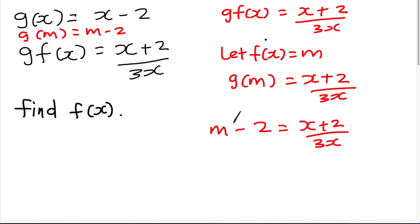Then what is my objective here? My objective is to find FX. If I want to find FX, I need to make M as subject, because M represents FX. So I just move the negative 2 to the other side, so M actually equals to X plus 2 over 3X plus 2.